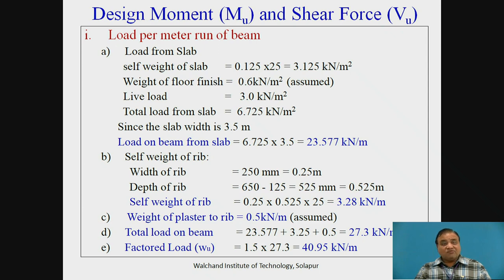Next is self weight of rib. Flange is already considered, therefore balance depth of beam is to be considered. Width is 250, depth is 650 minus 125, and self weight of the rib is 3.28 kN per meter. Weight of plaster to the rib is also assumed 0.5 kN per meter, and total load on the beam is addition of all above. We get factored total load as 40.95 kN per meter.